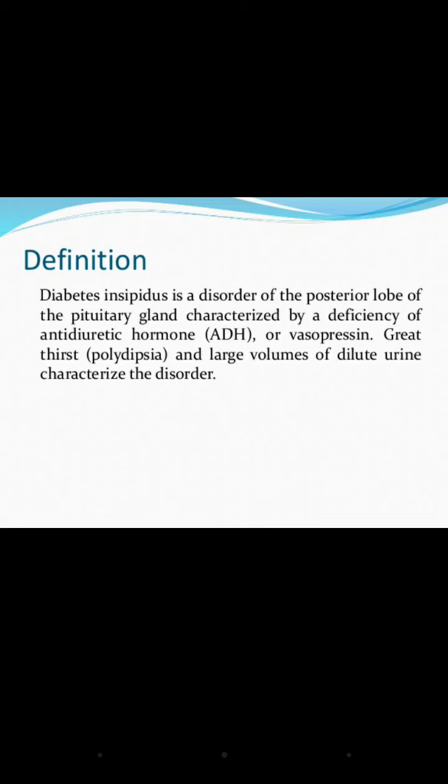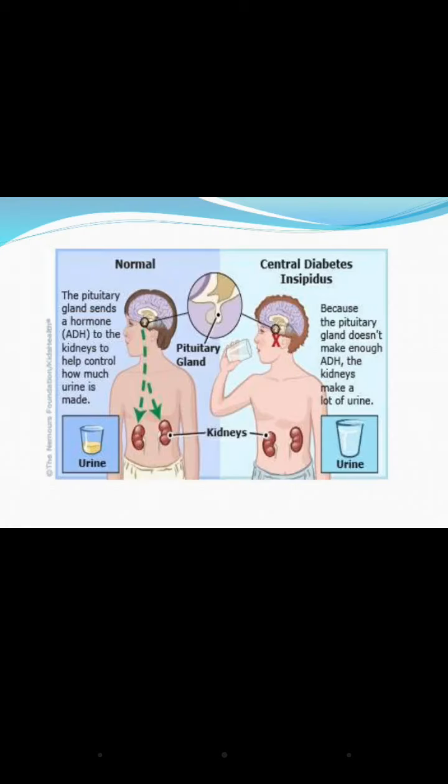In diabetes insipidus, there is a deficiency of antidiuretic hormone, also known as vasopressin. Normally, ADH decreases urine output, but because of its deficiency in diabetes insipidus, the person will have polyuria — passing large volumes of dilute urine each day, approximately two liters — along with polydipsia.